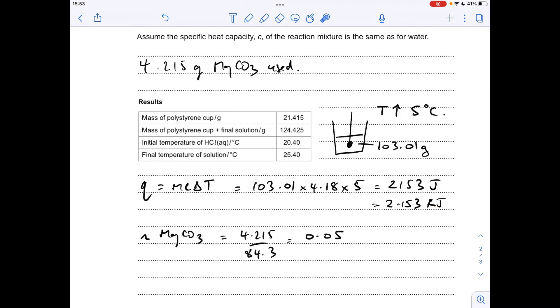Next thing we'll do is work out the moles of magnesium carbonate in this case that was used in the experiment, mass over MR, 0.05 moles.